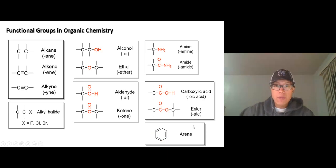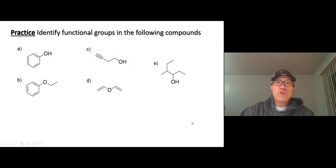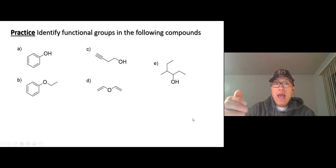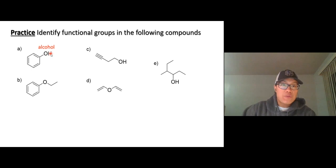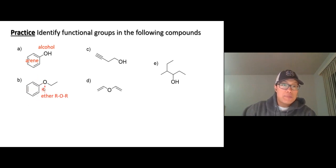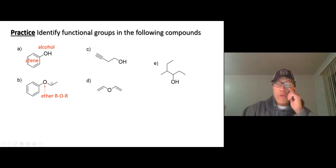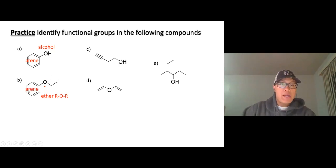Let's see if you can recognize the functional groups in these compounds — try it yourself first, then check with me. In compound A, we have an alcohol (OH) and an aromatic ring, so that's an arene. In compound B, we have an ether — there's an oxygen within the carbon chain, with a carbon chain on the left and right — that's an ether, and we also have an arene.